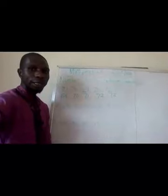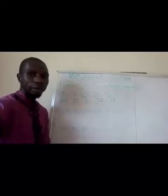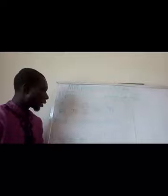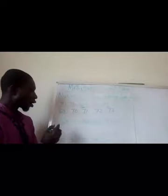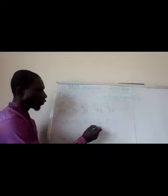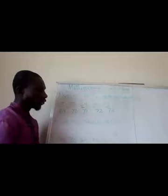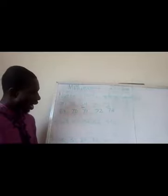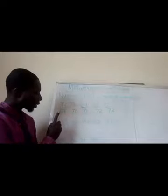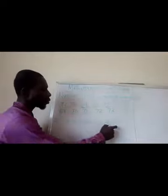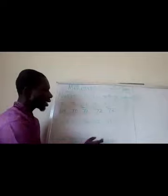Now let's go to the second example. The second example numbers are 68, 40, 36, 42, and 34. The least number here — we have one number in the 60s, two numbers in the 40s, and two numbers in the 30s.